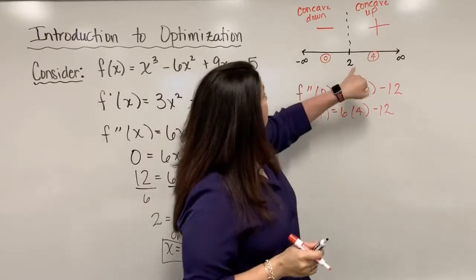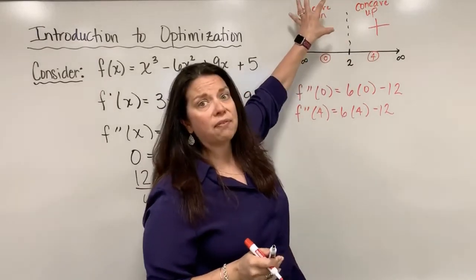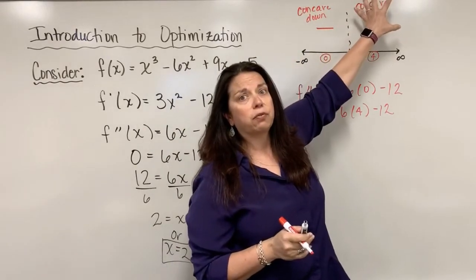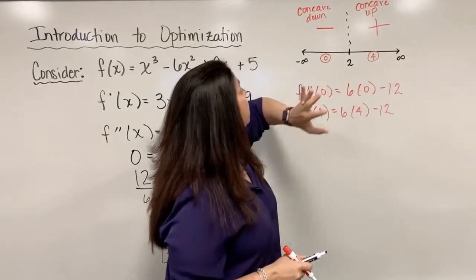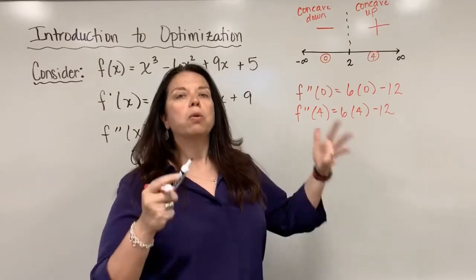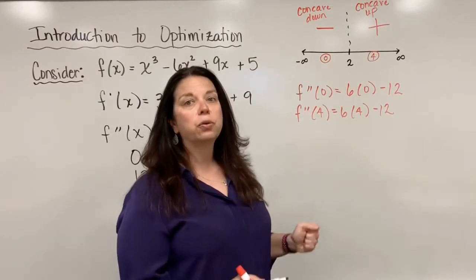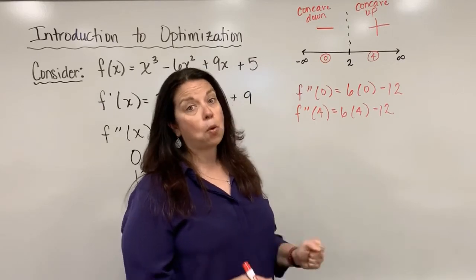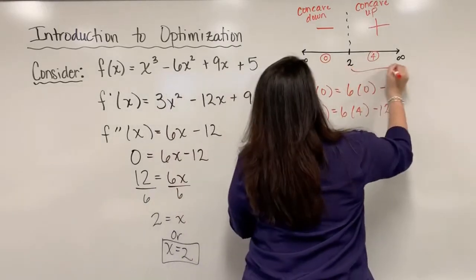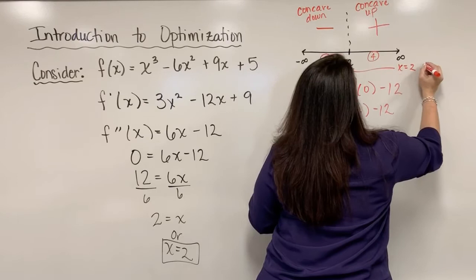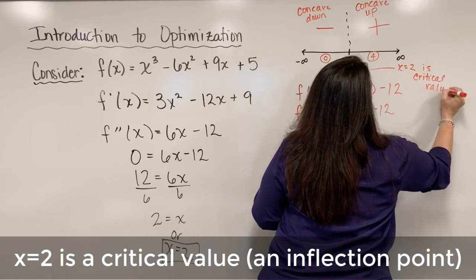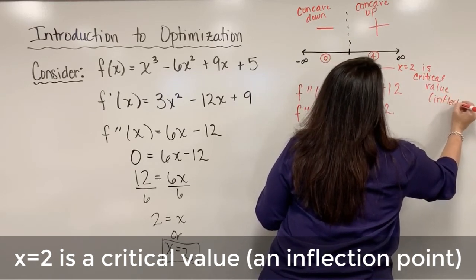Something interesting happened at 2. I went from having a graph of the original function being concave down to suddenly the graph being concave up, and that change happened at 2. So what do we know about x equals 2? This confirms for us that 2 is an inflection point. It is the place at which I have a change in concavity. We can note here that x equals 2 is a critical value, an inflection point.